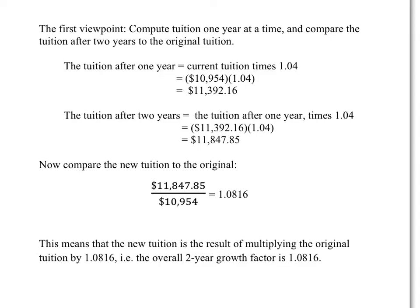With each successive year, we multiply by a new copy of 1.04. So after two growths, we have a new tuition of $11,847.85. How much more is that? How many times greater is that than the original tuition?